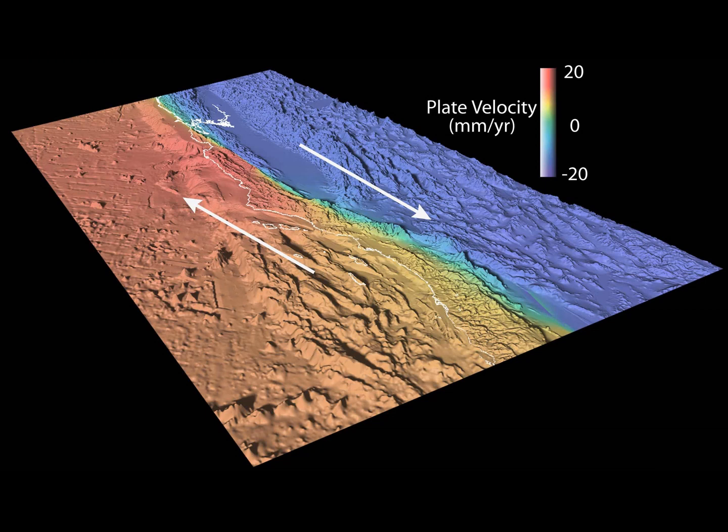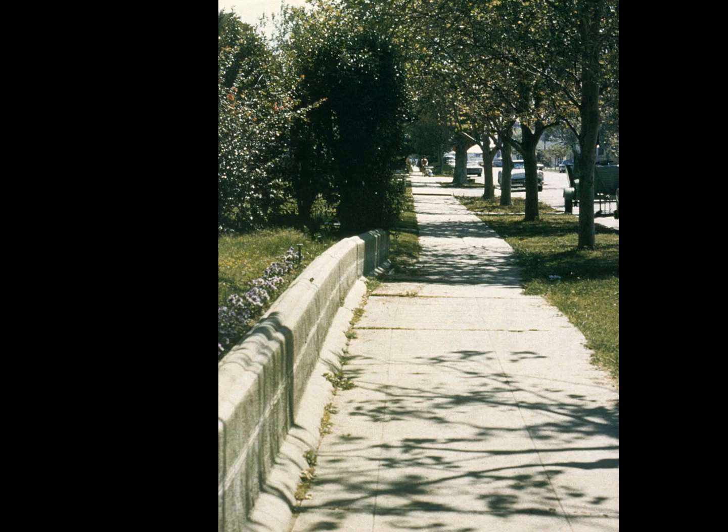Earthquakes occur when tectonic plates slide past each other but get caught against each other, building up stress that gets released in one large burst. This image of the San Andreas Fault in the western U.S. shows the relative movement of each plate. The maximum movement is about 20 millimeters per year, or 2 centimeters per year. It doesn't seem like much, but it adds up over time. Earthquakes occur when stress overcomes a locked fault, releasing stored energy. A sidewalk straddling the San Andreas Fault that was straight when built is now visibly shifted as each plate moves 20 millimeters apart each year.